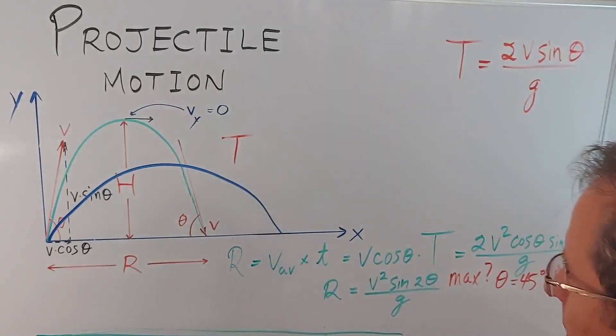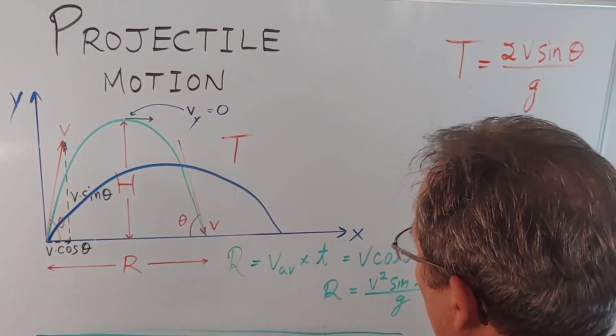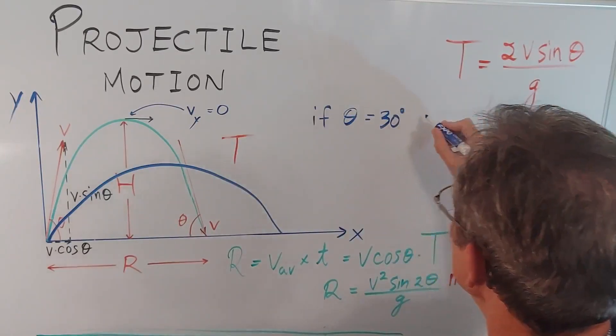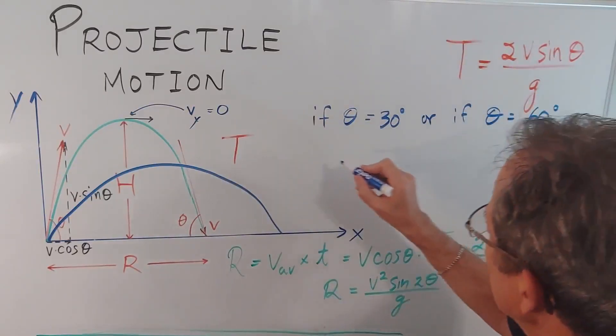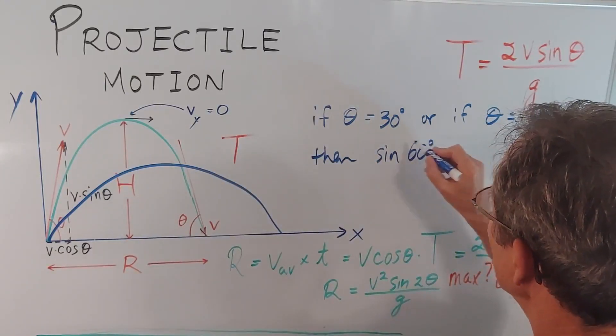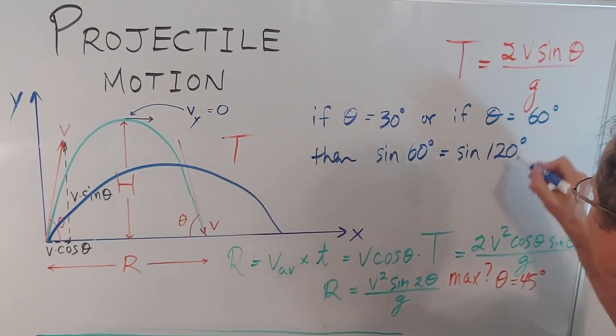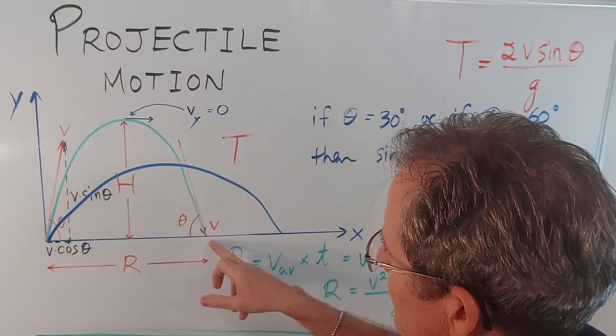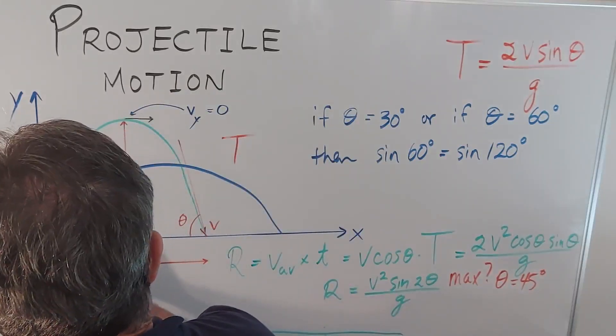That's the maximum. Now there's another interesting property of sine 2θ. So for example if θ equals 30 degrees or if θ equals 60 degrees then sine 2θ for 30 turns out to equal the sine of 2 times 60 which is 120. So over here when I drew it at 60 degrees and it landed here, if I was to launch it at 30 degrees it would also land here. Let's draw that. Something like this.